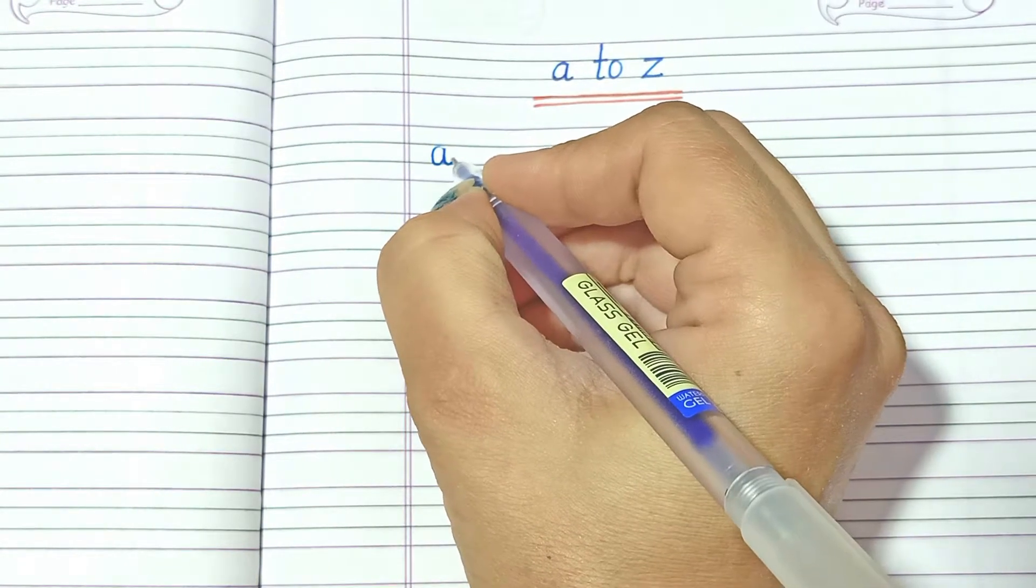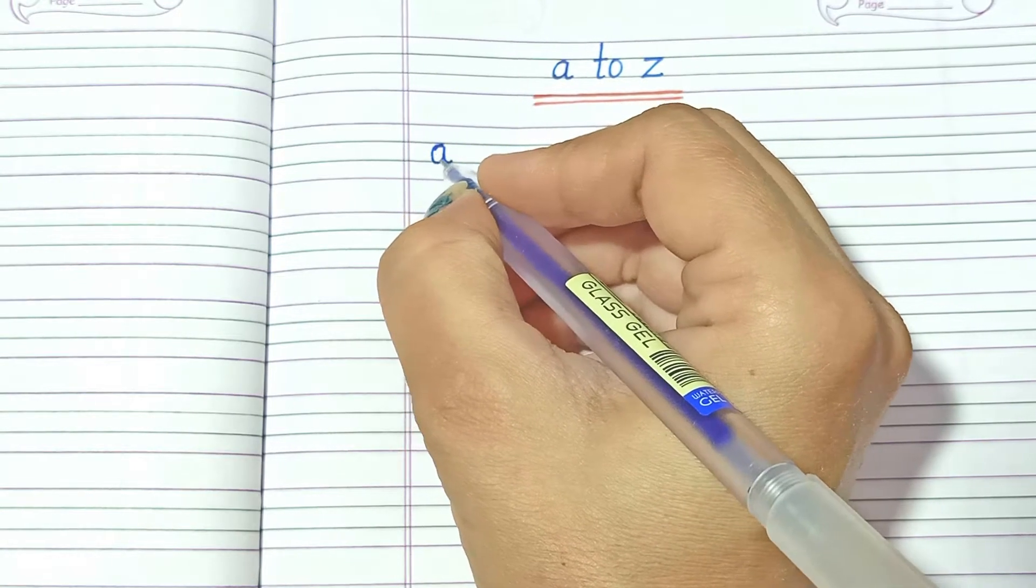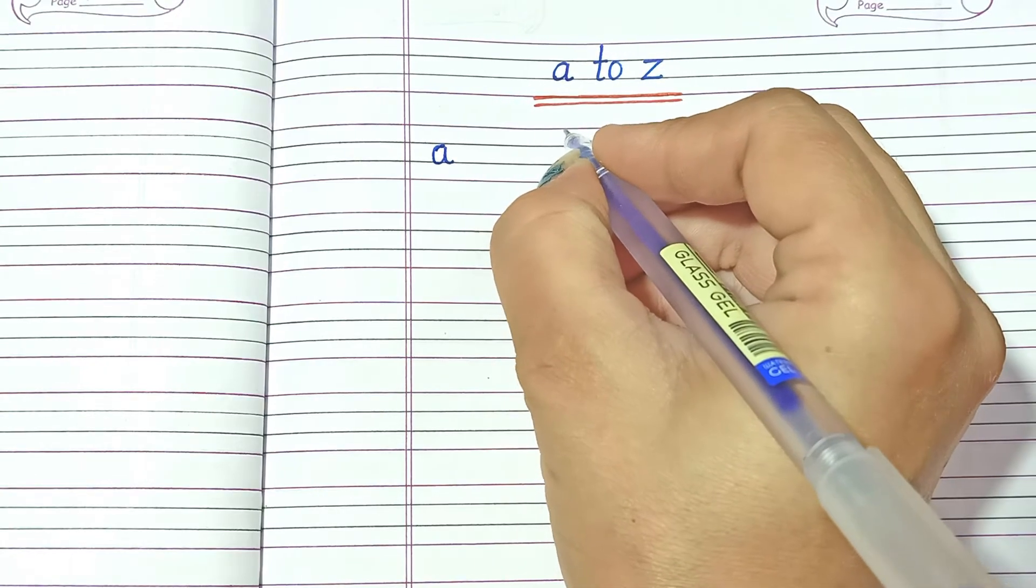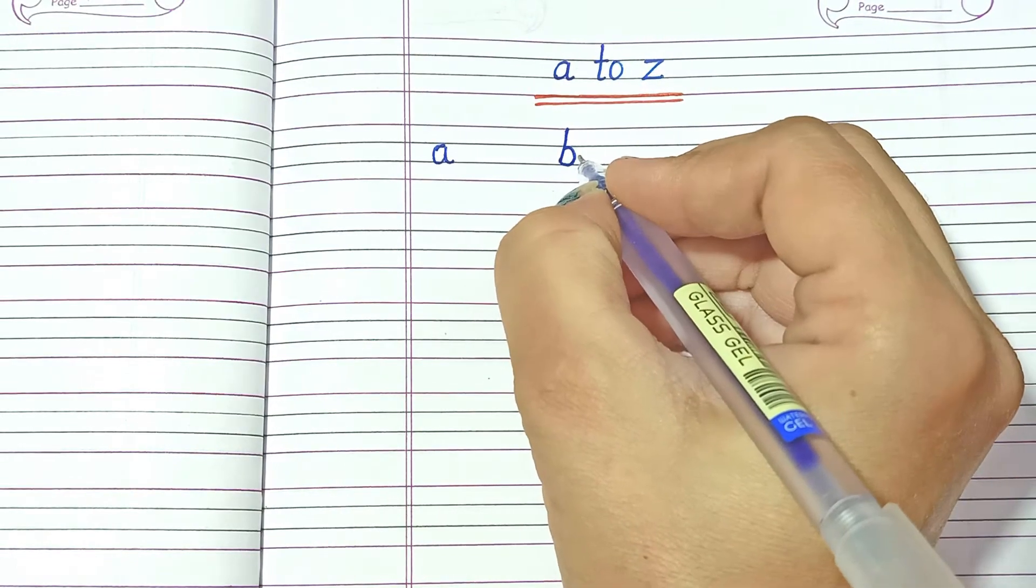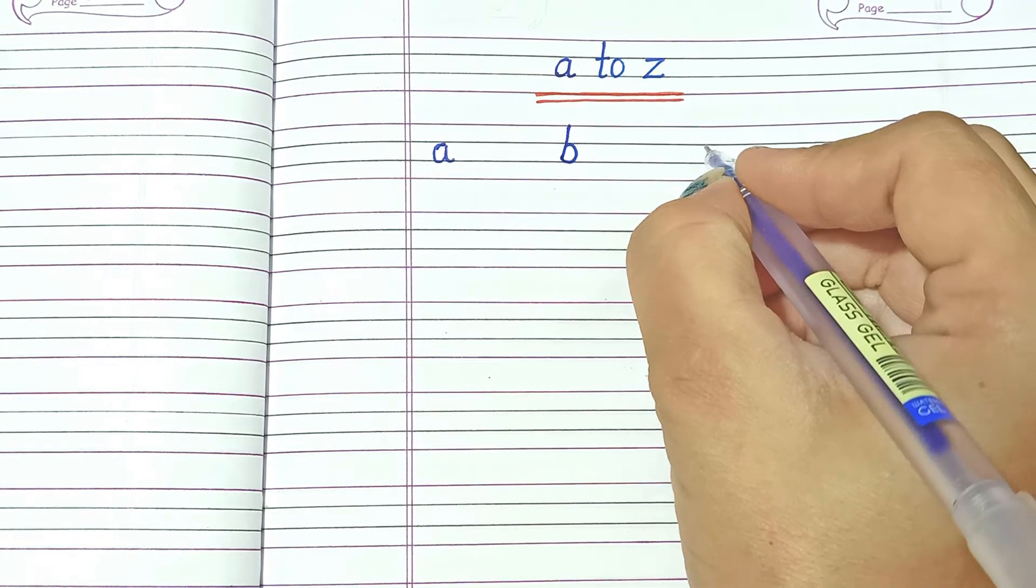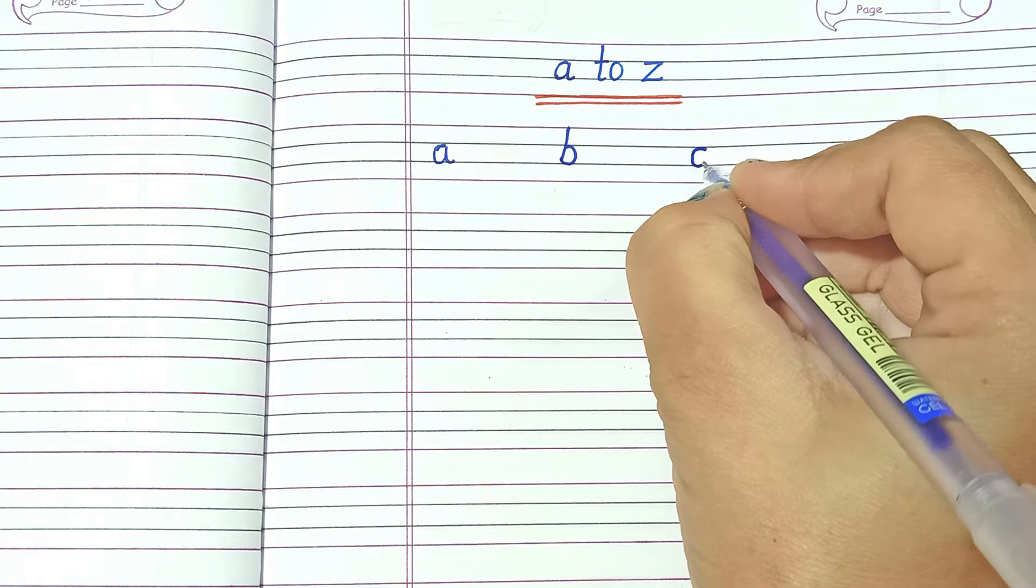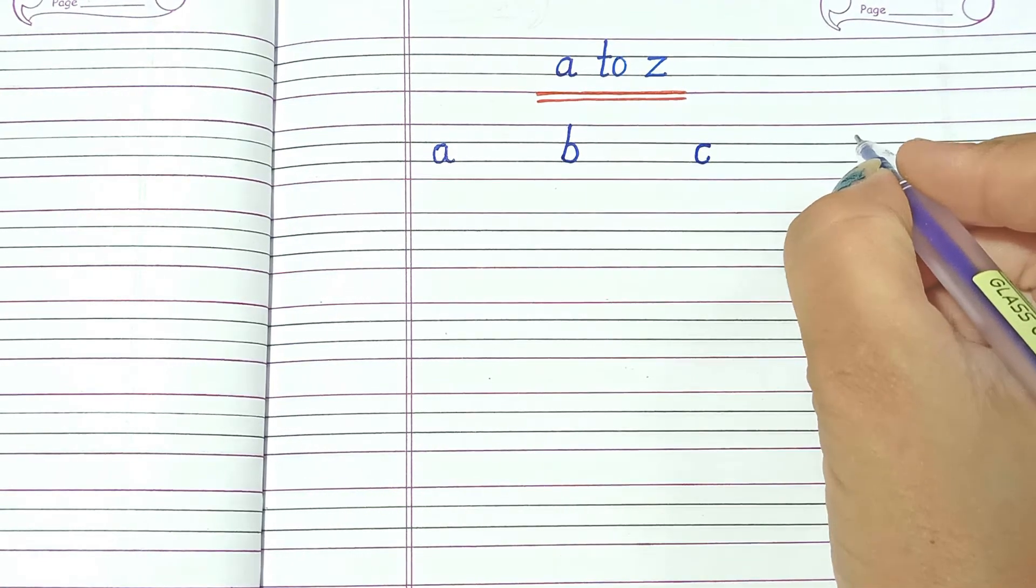A, A for Apple. B, B for Born. C, C for Cat.